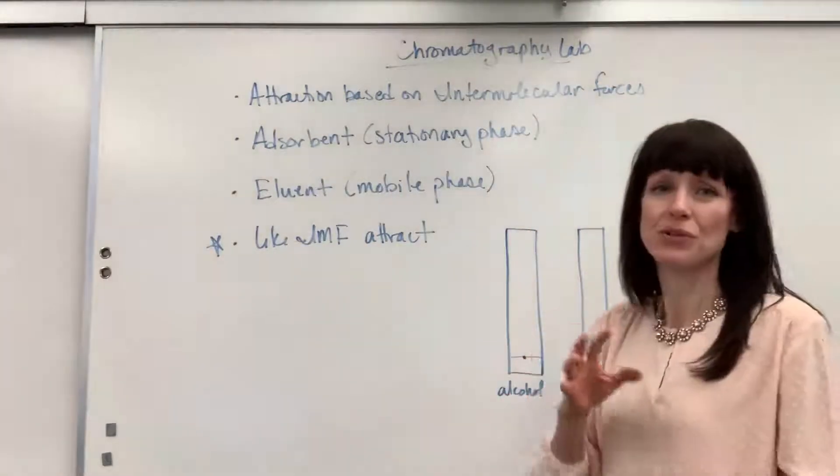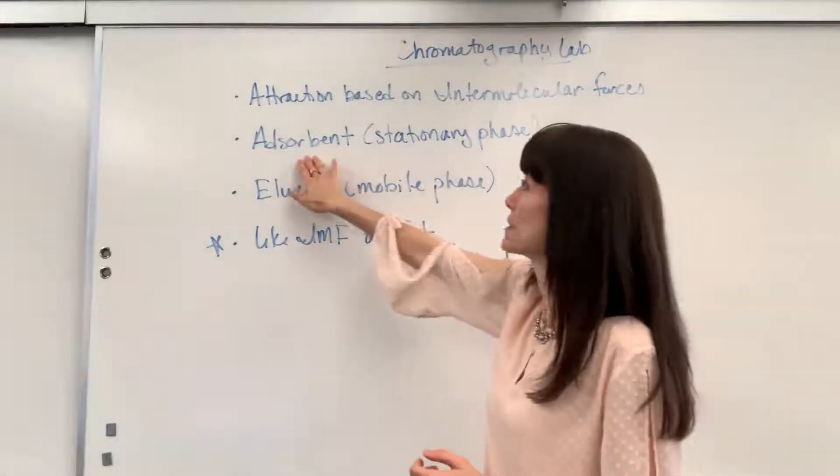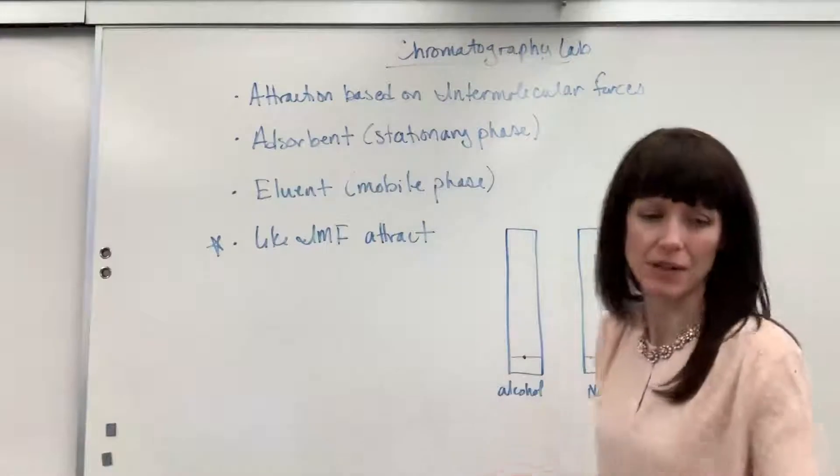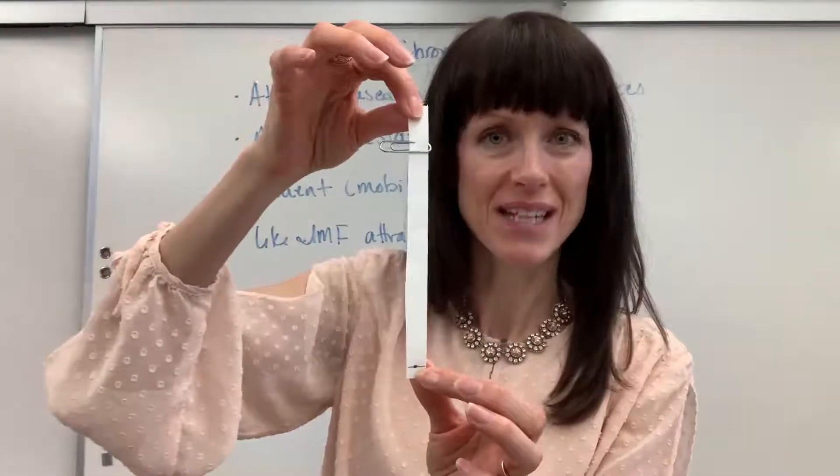You have two phases. You have what's called the stationary phase, that's called the absorbent. Here the stationary phase is paper. Let me give you an example. This is some filter paper, that would be a stationary phase.